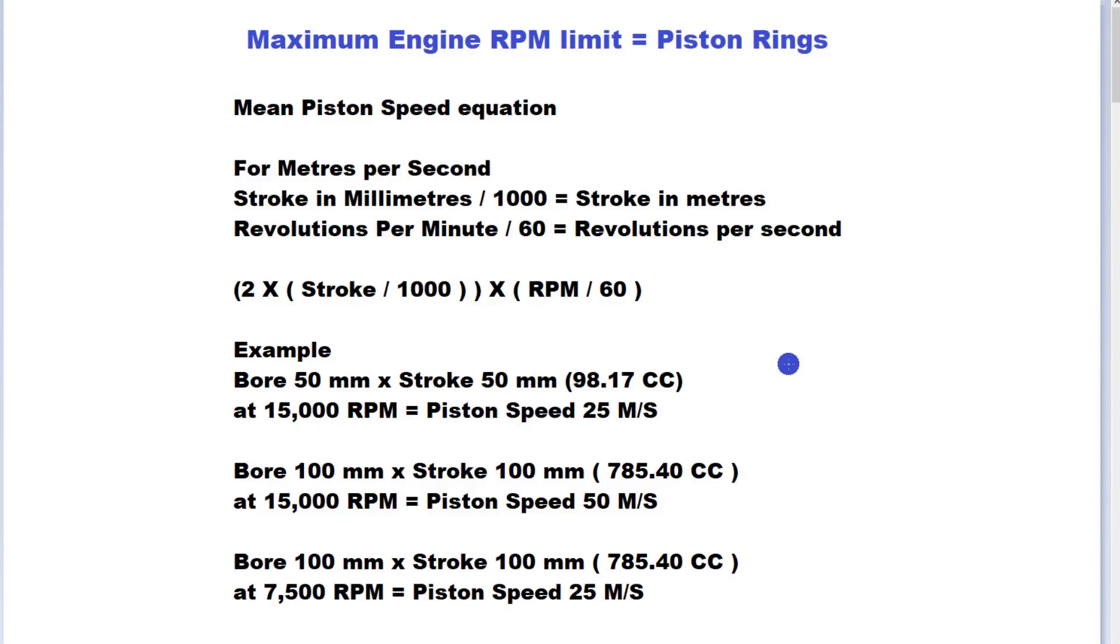How we determine the maximum RPM of the engine is the piston, and what we refer to is the mean piston speed. For most engines that will be a figure of roughly 25 to 30 meters per second.